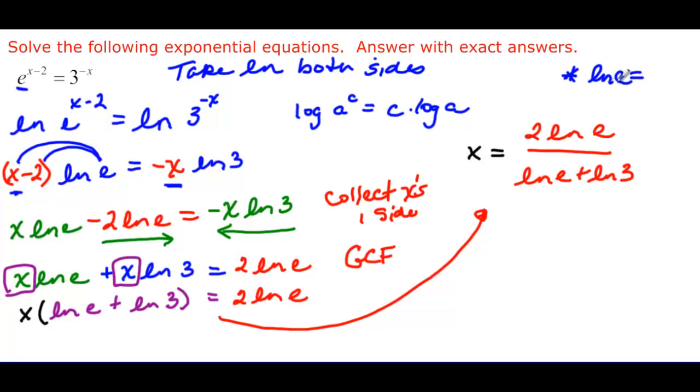the exponent on e that will get me e, is 1. So everywhere that I see that I had ln e, it's really just 1. This is a 1 and this is a 1. So my final answer should really be x is equal to 2 over 1 plus ln 3. That's the final answer.